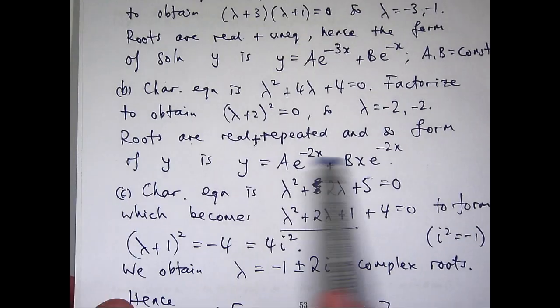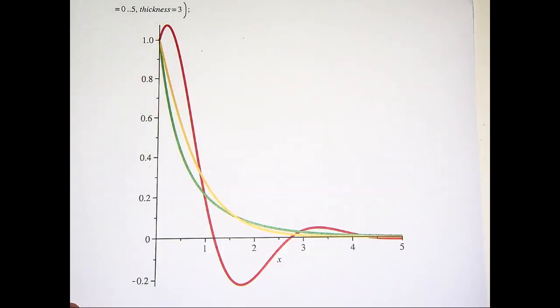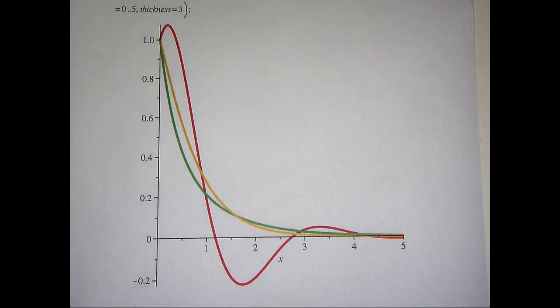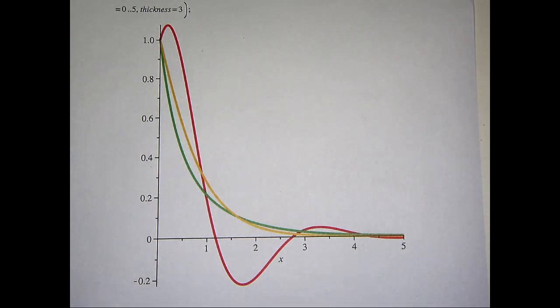Now what I've done is because A and B are arbitrary constants, I've just chosen them so that all the graphs start at the same point. Now you can see with the red curve, there's some oscillation going on. That's the third equation that we looked at. The green curve is the first equation, or the first solution that we looked at. And the yellow curve is the second equation. So the second equation, the yellow curve refers to what's known as critical damping. The green curve is over damping, and the red curve is under damping.